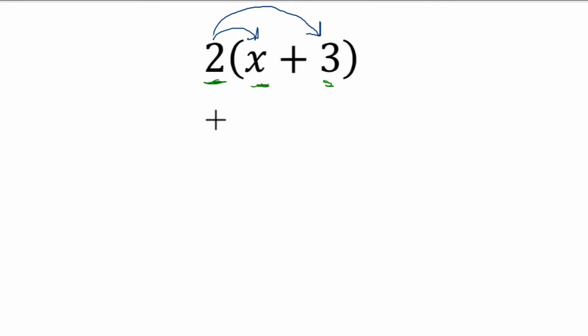So two times x is two x, plus two times three, which is six, and we're done.